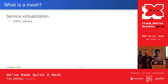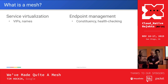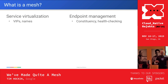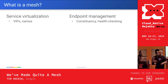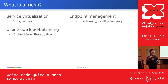Let's look at a few properties of what I mean by service mesh. Service virtualization — virtual IPs, virtual names, the idea that a service is not just the endpoints behind it, there's actually an abstraction. Endpoint management — managing all the things behind that abstraction, all the pods, VMs, or machines that make up a service, including health checking and removing dead nodes. Client-side load balancing — people want the smarts on the client side, not a box in the middle concentrating all the logic.